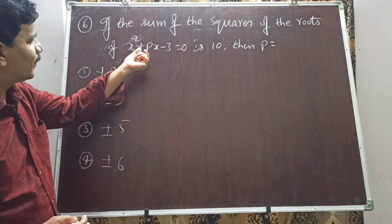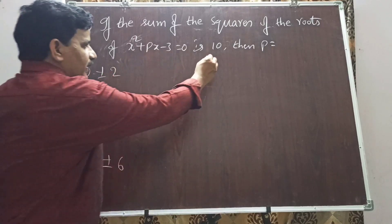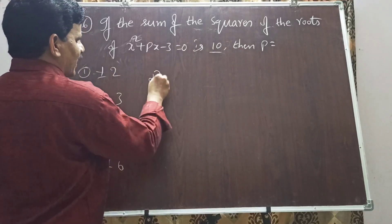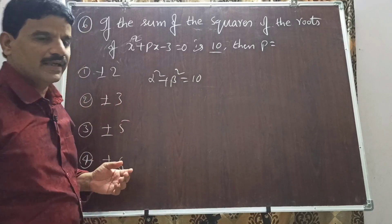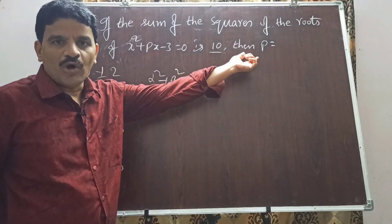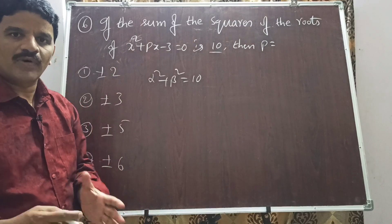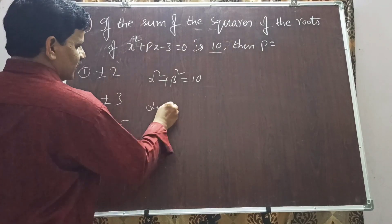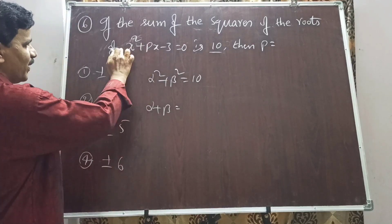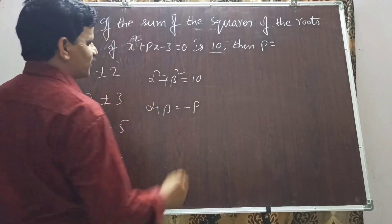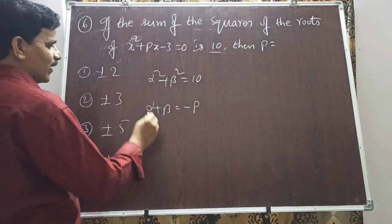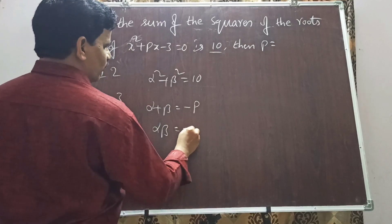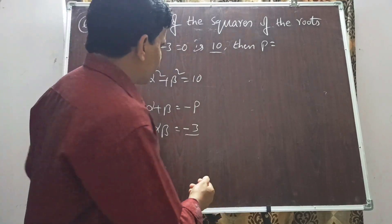Question 6: If the sum of squares of the roots of x² + px - 3 = 0 is 10 (i.e., alpha² + beta² = 10), then p equals how much? For this equation, sum of roots alpha + beta = -p/1 = -p, and product of roots alpha·beta = -3/1 = -3.